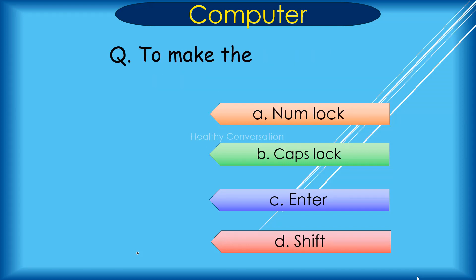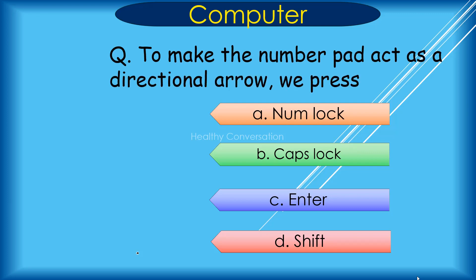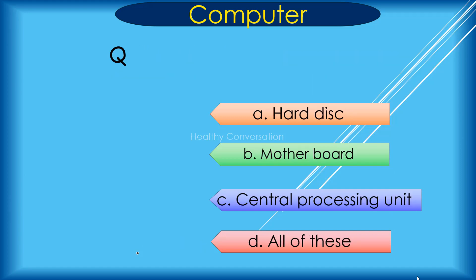Question: To make the number pad act as a directional arrow, we press dash. The options are: A. Num Lock, B. Caps Lock, C. Enter, D. Shift. Correct answer is D. Shift.